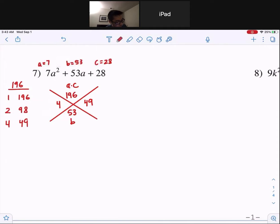Now remember, your a value is greater than one, which means you guys got to factor this by using the grouping method. Write the first term. Remember, the middle term breaks off into the two numbers we just found. Plus 4a plus 49a. And then, don't forget the last term, plus 28.